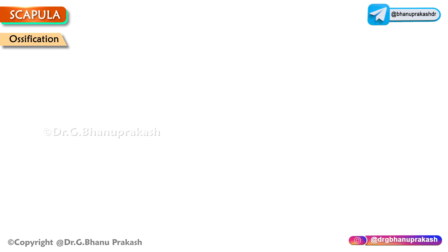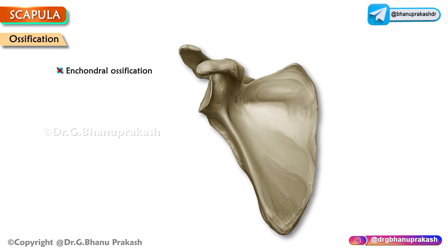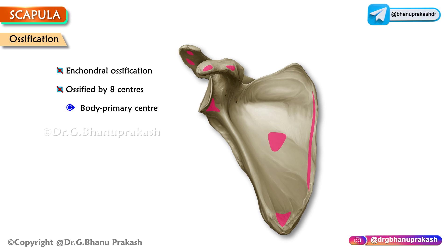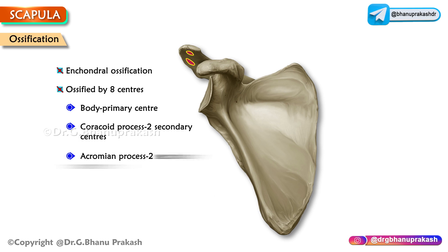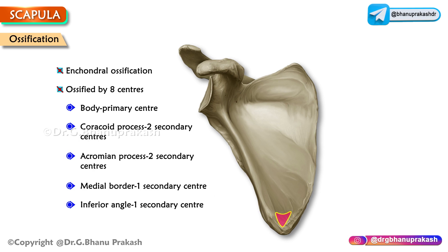The scapula undergoes endochondral ossification and is ossified from cartilage by eight centers — one primary center and seven secondary centers. Two centers appear in the coracoid process, two in the acromion process, one in the medial border, one in the inferior angle, and one in the lower part of the rim of the glenoid cavity.